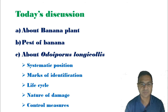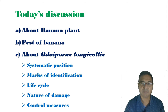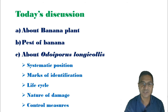Third, one of the major pests which attacks the banana plant is named Odoiporus longicollis. We will cover the systematic position of that pest, then the host plant, marks of identification in the form of larva as well as adult, the life cycle, nature of damage, and lastly the control measures.